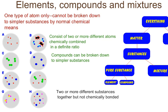By definition, elements are made up of only one type of atom, and they cannot be broken down into simpler substances by normal chemical means. So if you have one type of atom, you have an element on your hands. Simply check your periodic table — all the substances listed on Table S are elements.